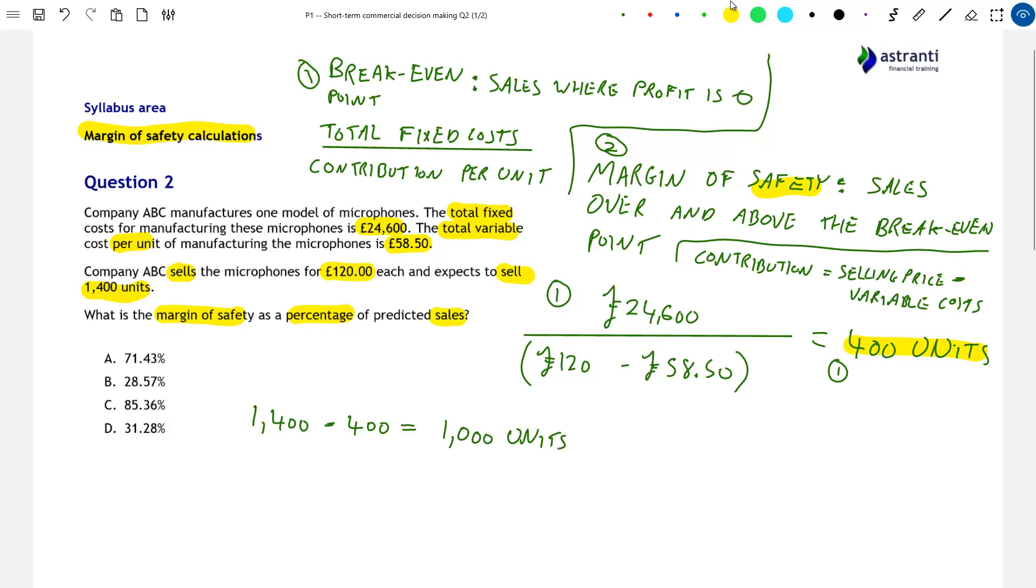However, this is not our final answer. The question asks us to express this margin of safety as a percentage of predicted sales. So all we have to do to complete step two of our calculations is to take this figure of 1,000 units as a percentage of the predicted sales of 1,400 units. So to do this, we take our figure of 1,000, divide it by 1,400 and then multiply it by 100 to express it as a percentage. So this gives us a figure of 71.42857 and so on percent, which to two decimal places is 71.43 percent.